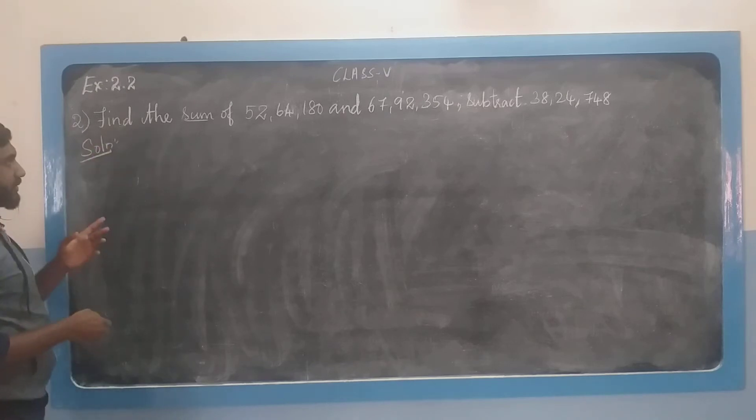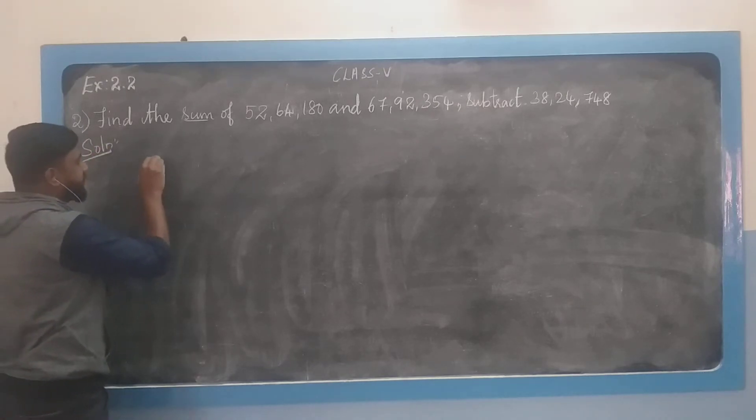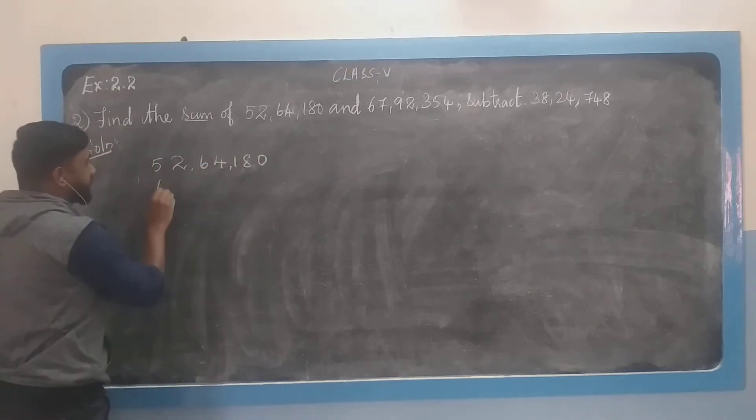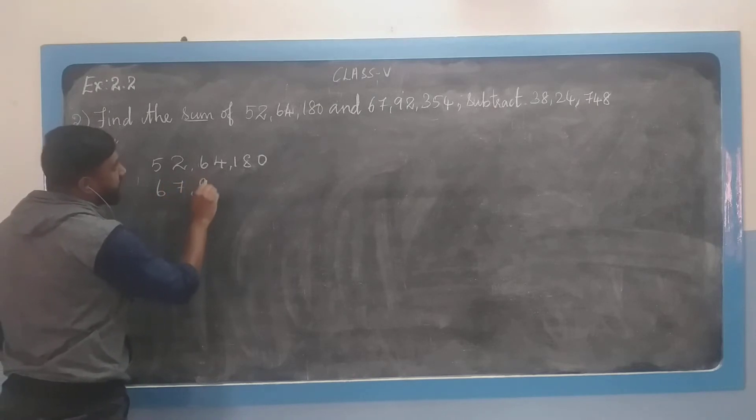We need to add the first two numbers. The first number: 5, 2, 6, 4, 1, 8, 0. And second number: 6, 7, 9, 2, 3, 5.